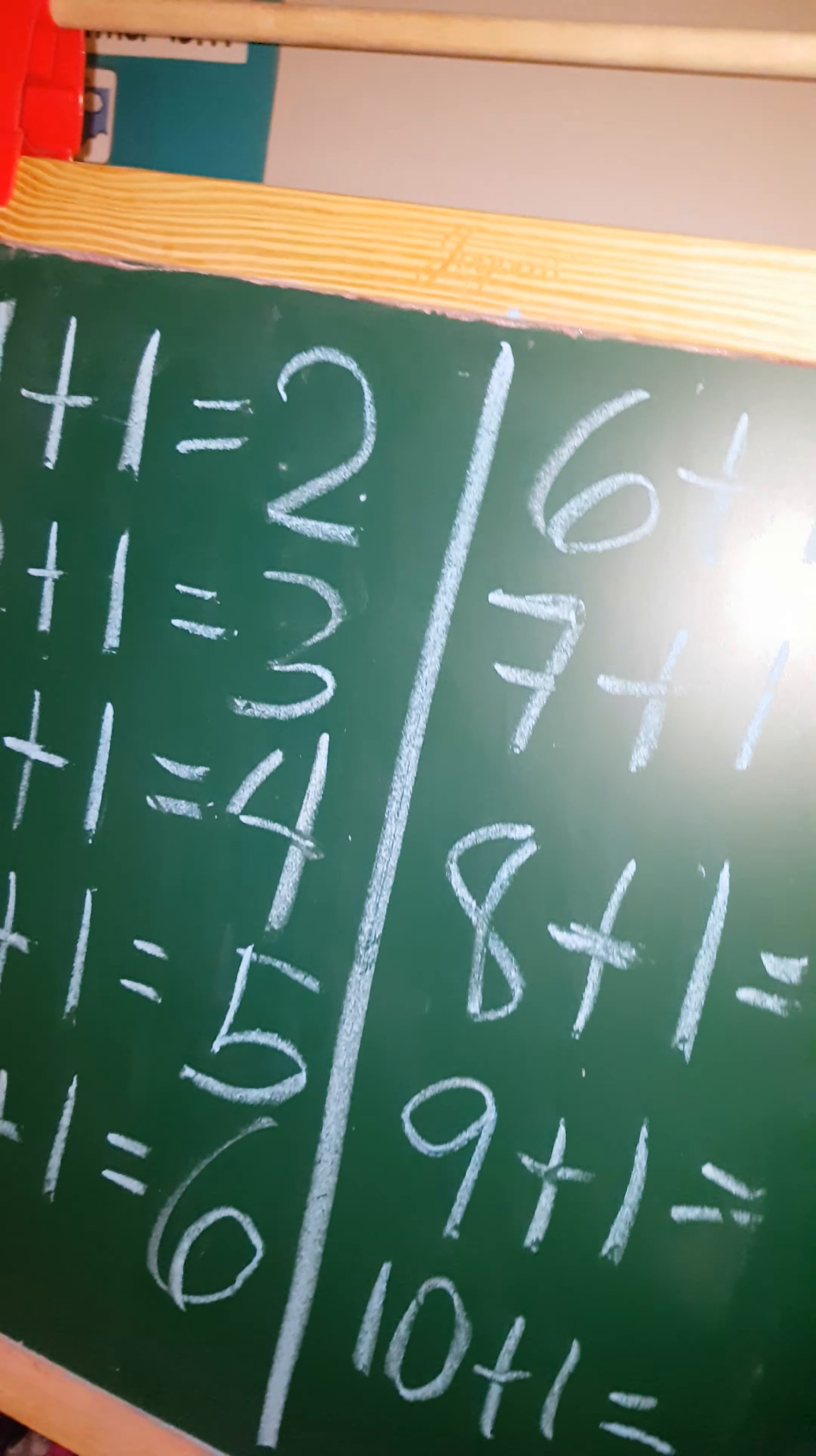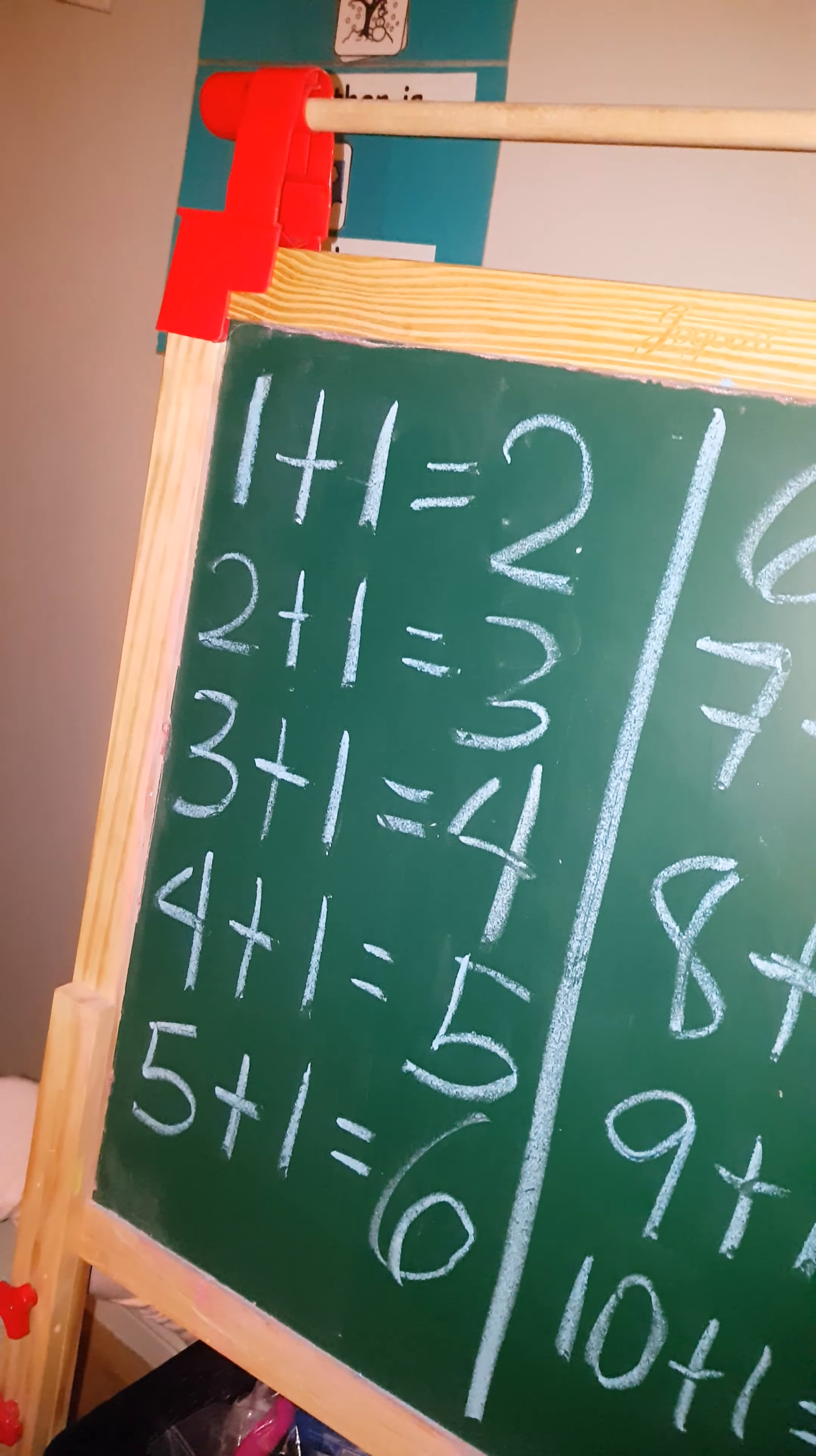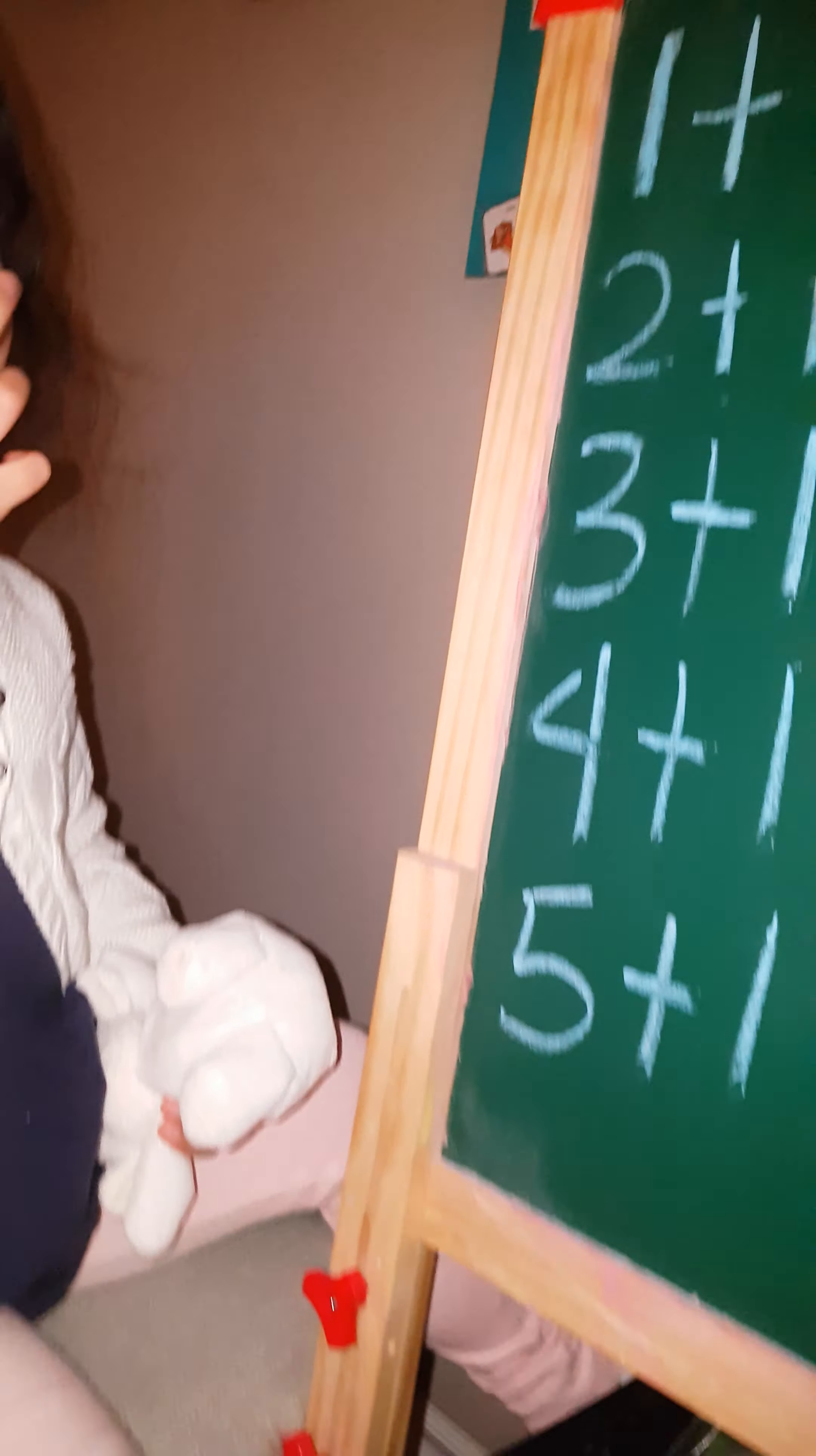Six plus one equals? Louder. Seven. Seven. Very good. Seven. Seven plus one equals? Seven plus one equals? Eight. Louder. Eight. Eight. Very good.